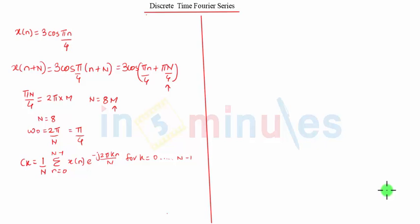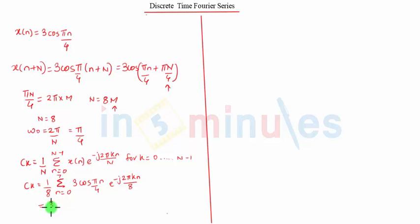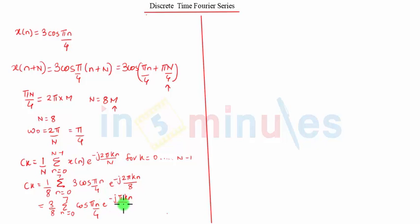So let us substitute the values into the formula. It gives c(k) = (1/8) · Σ[n=0 to 7] 3cos(πn/4) · e^(−j2πkn/8). Further simplifying, this gives (3/8) · Σ[n=0 to 7] cos(πn/4) · e^(−jπkn/4).